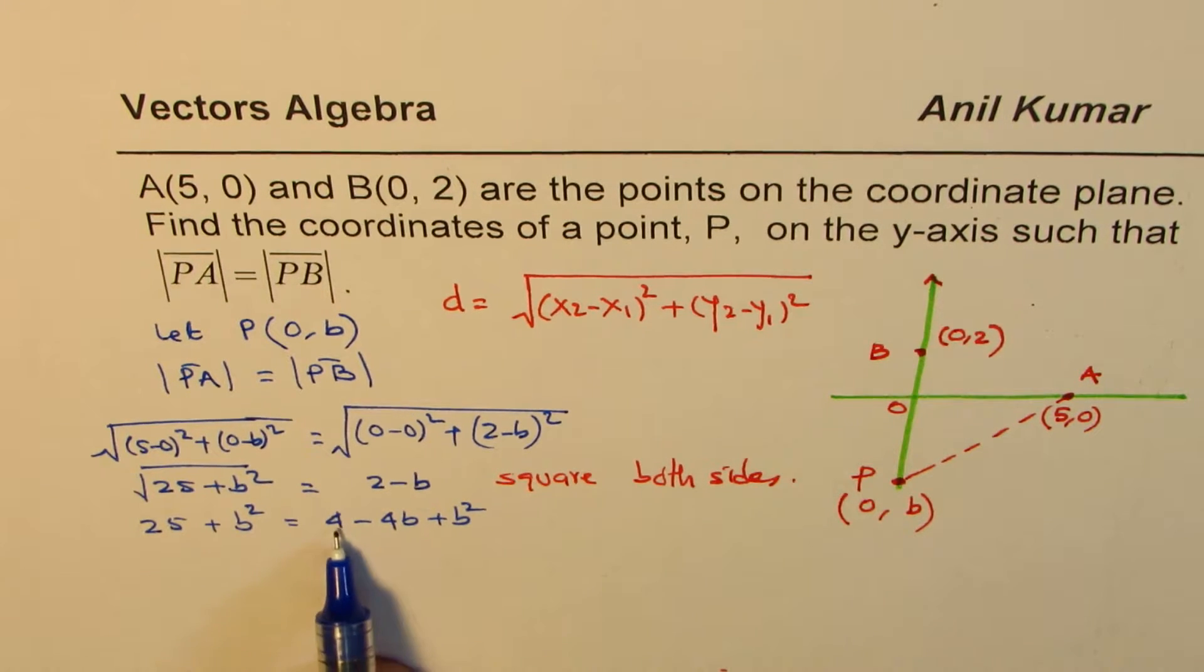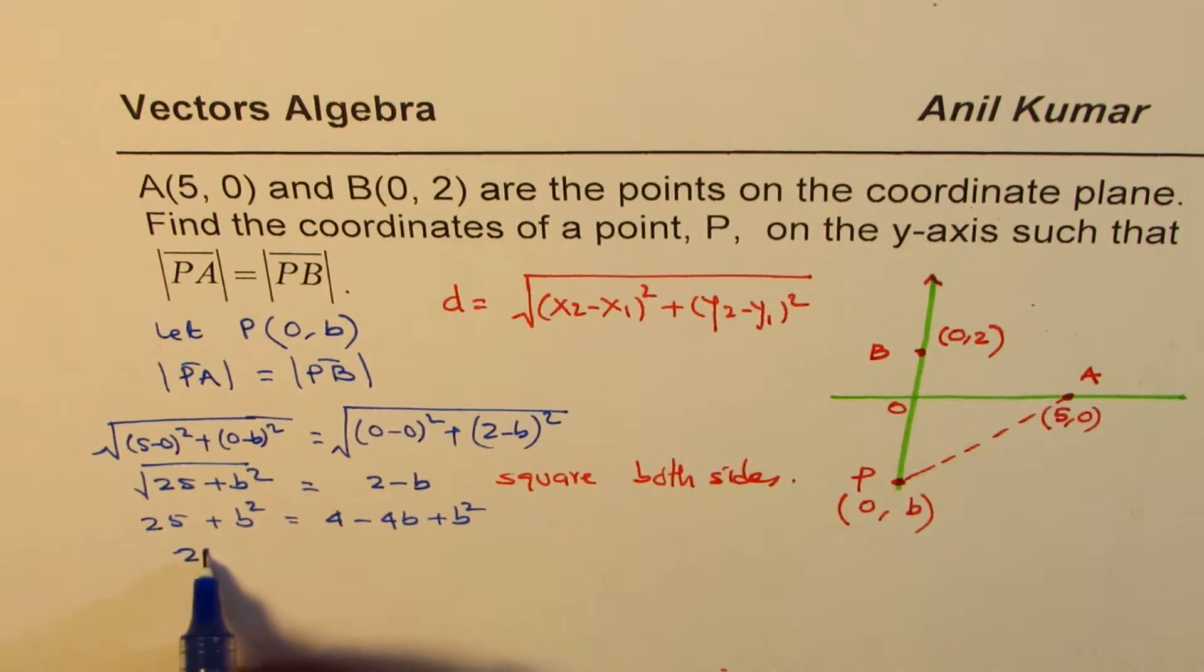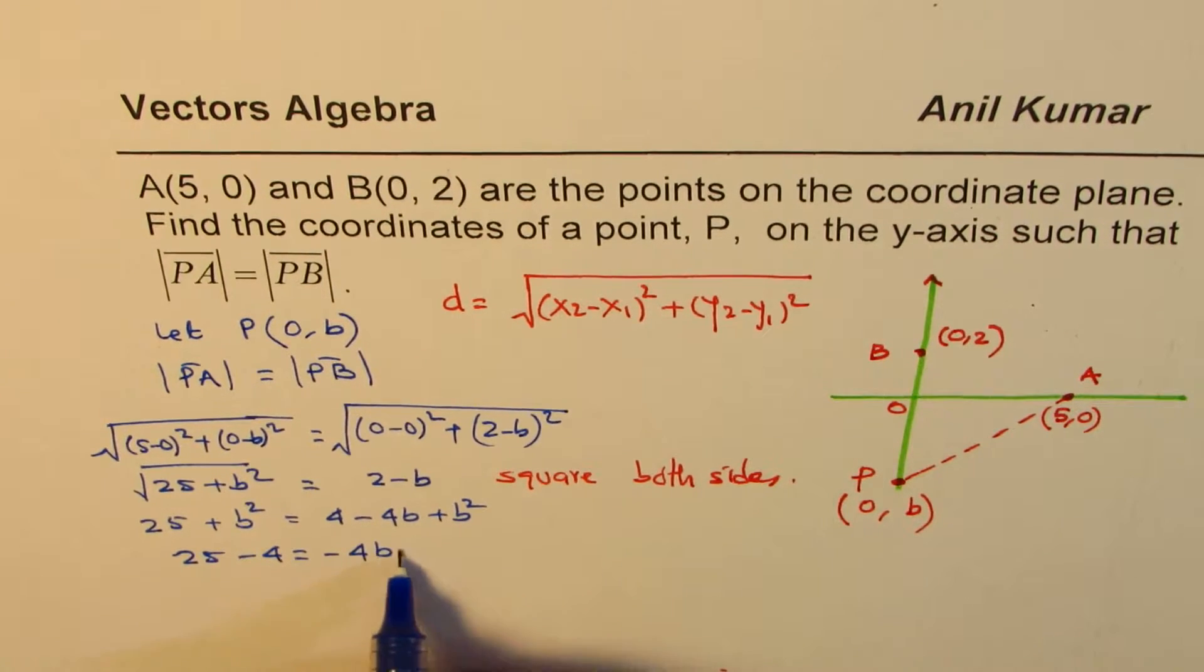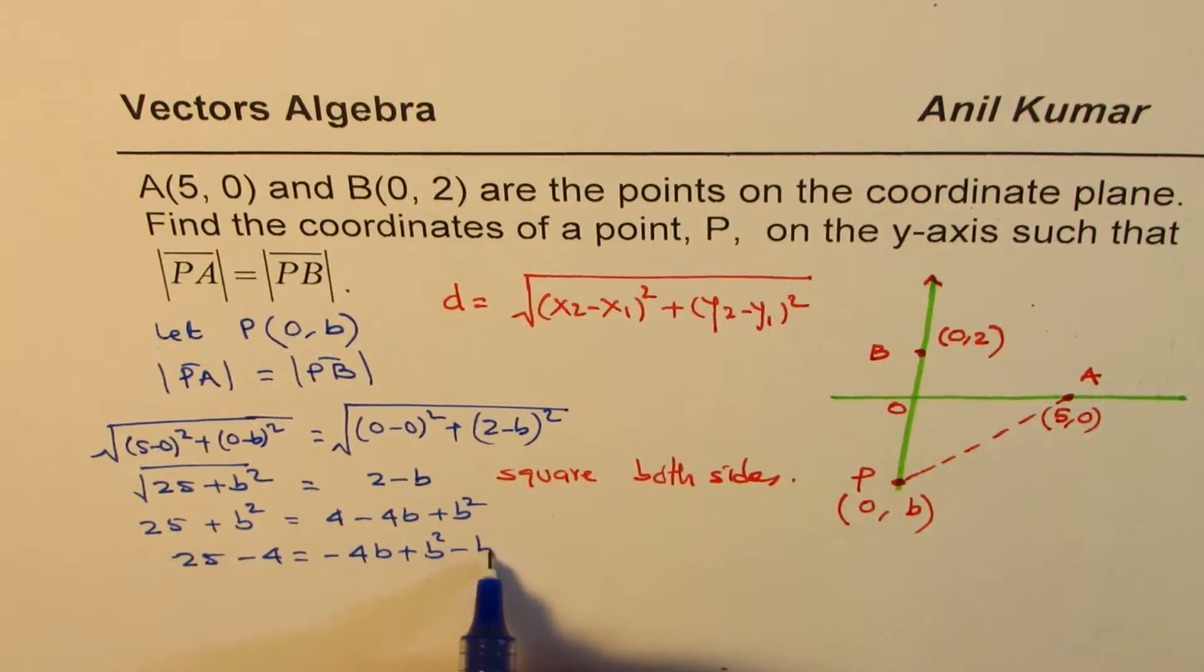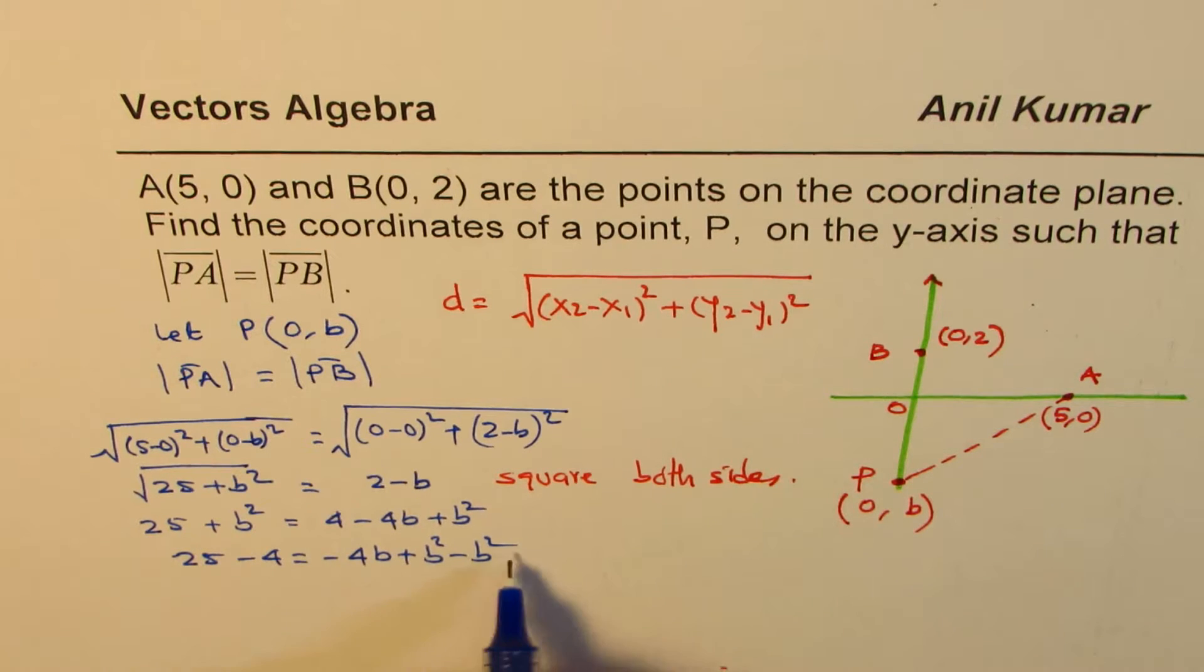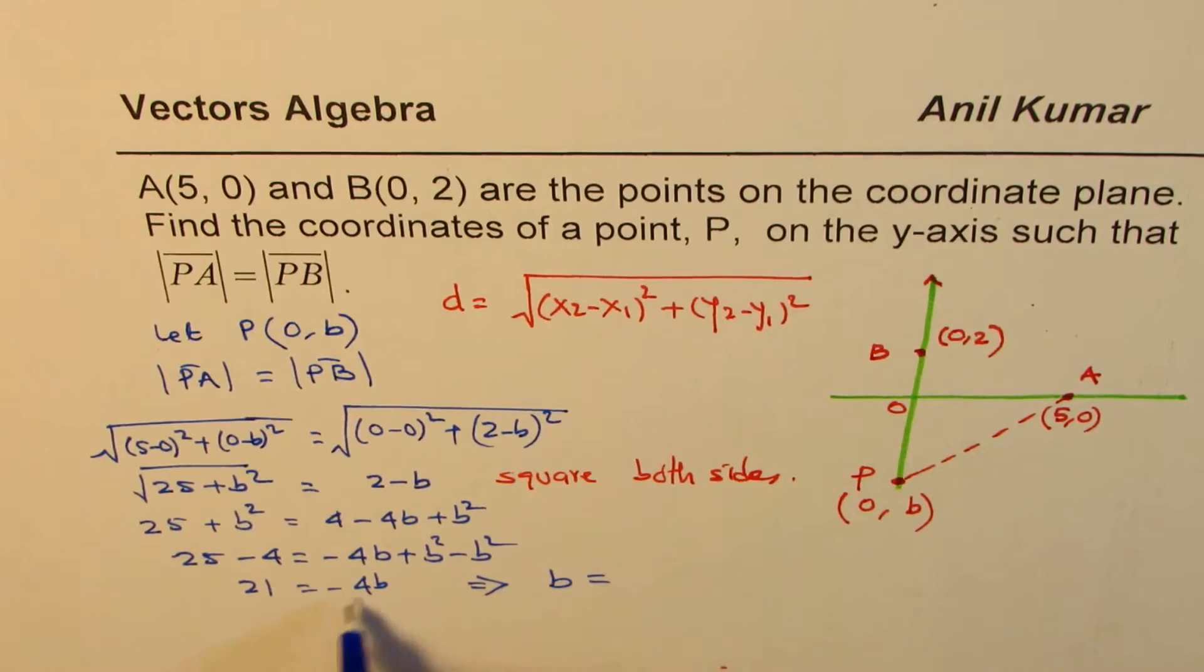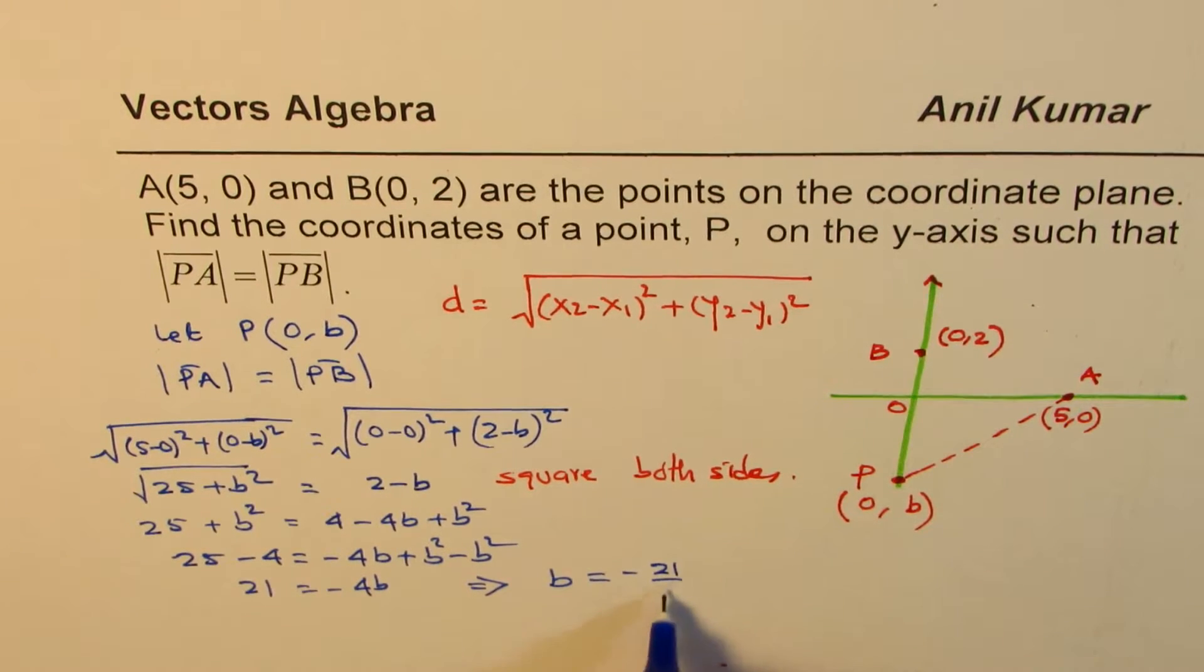Now we can solve this equation. Taking b on this side, 4 on the other side, we get 25 - 4 = -4b + b² - b². And b² minus b² is 0, so we get -4b = 21, and that gives you b = -21/4.